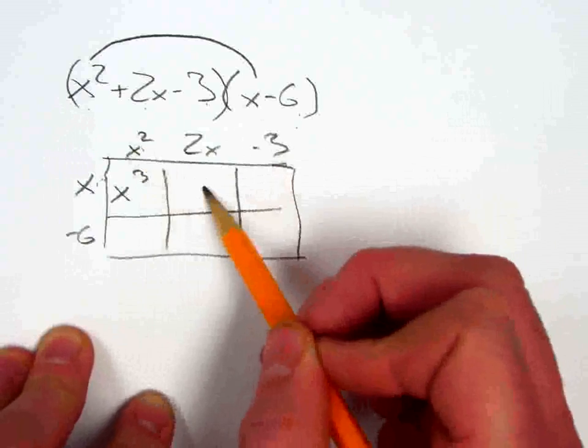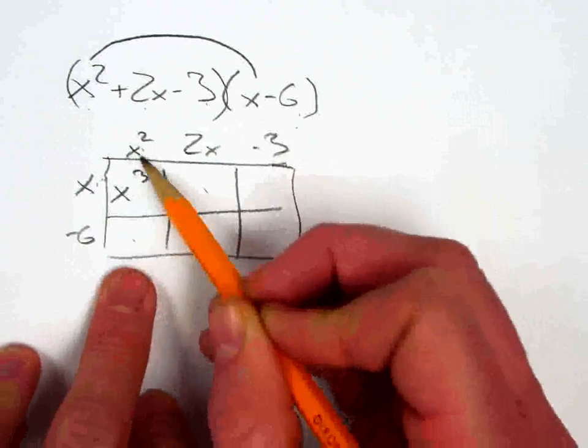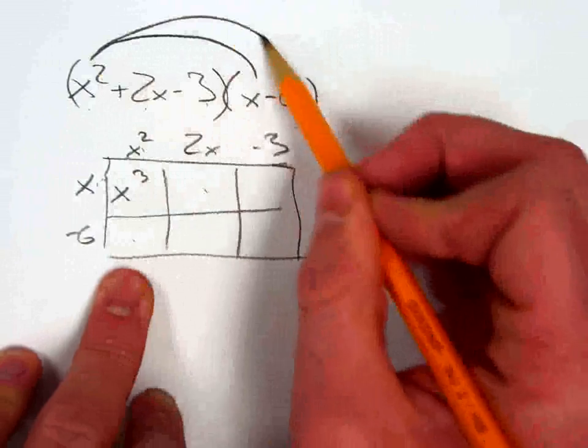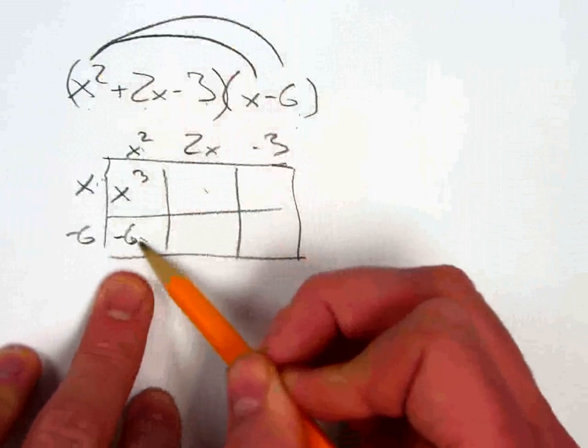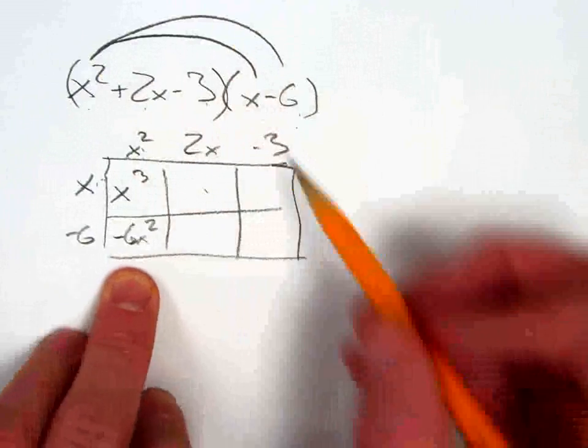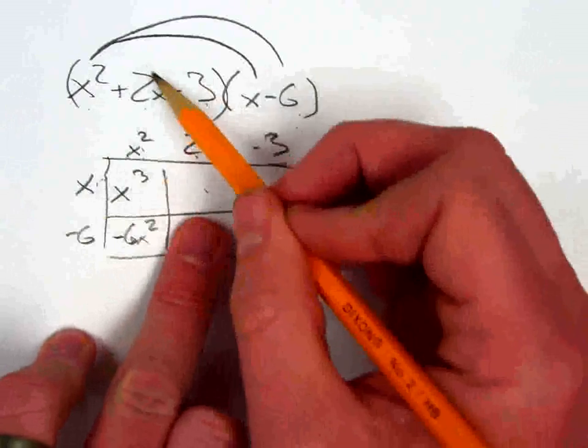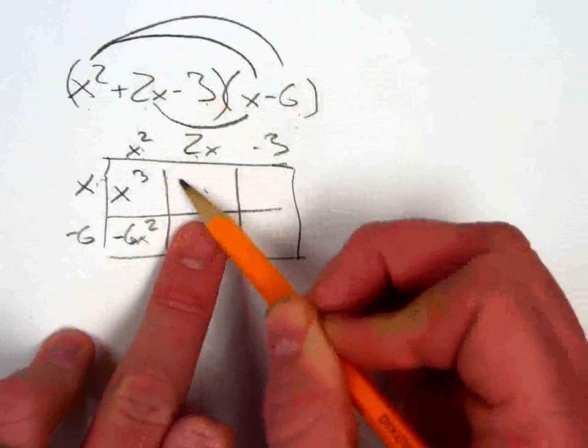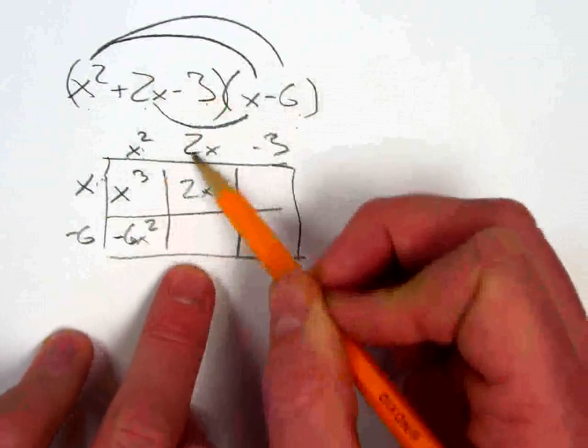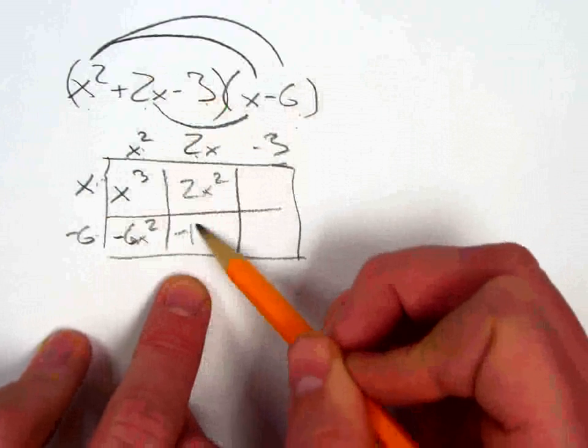I could multiply this box next or I could do this one next. x squared times negative 6 is negative 6x squared. Then I could go here. 2x times x is 2x squared. 2x times negative 6 is negative 12x.